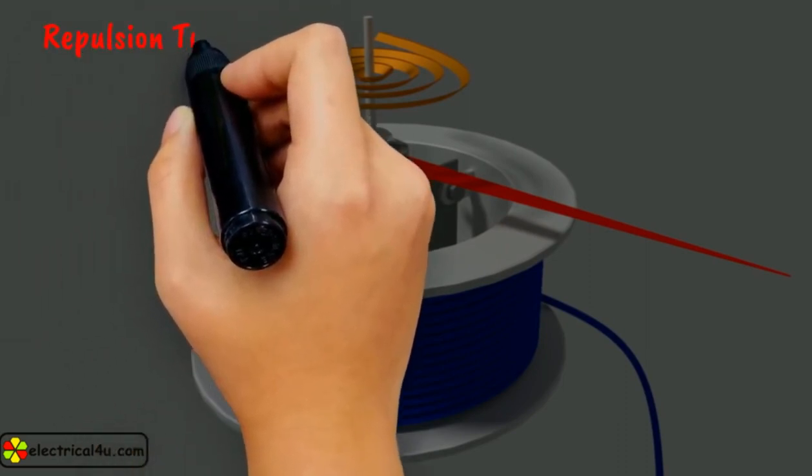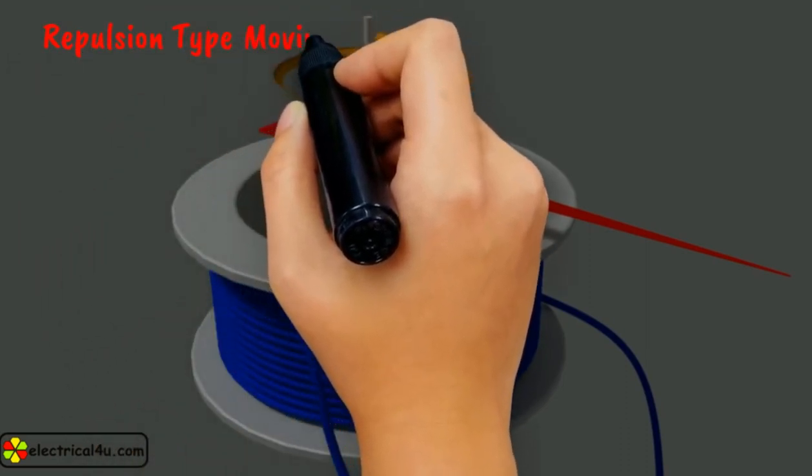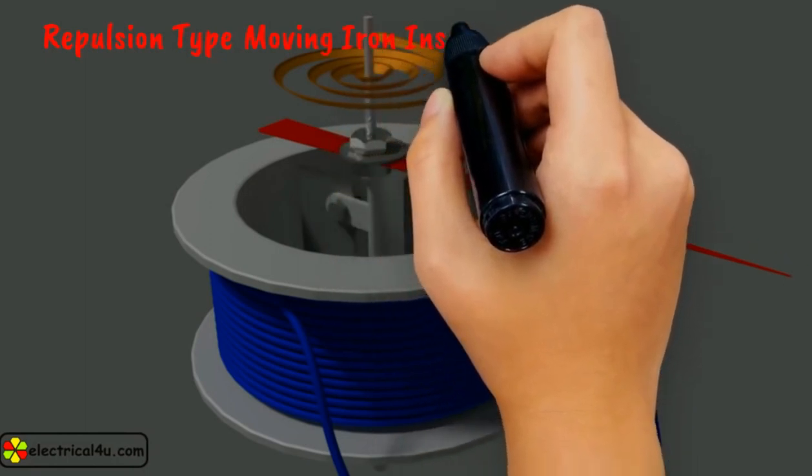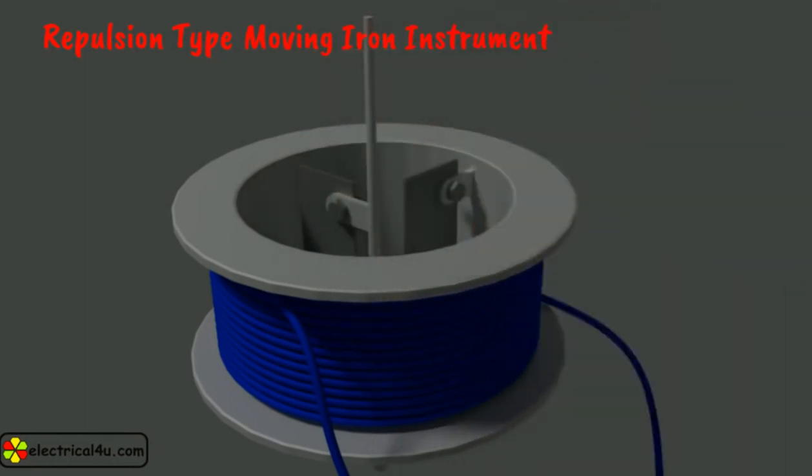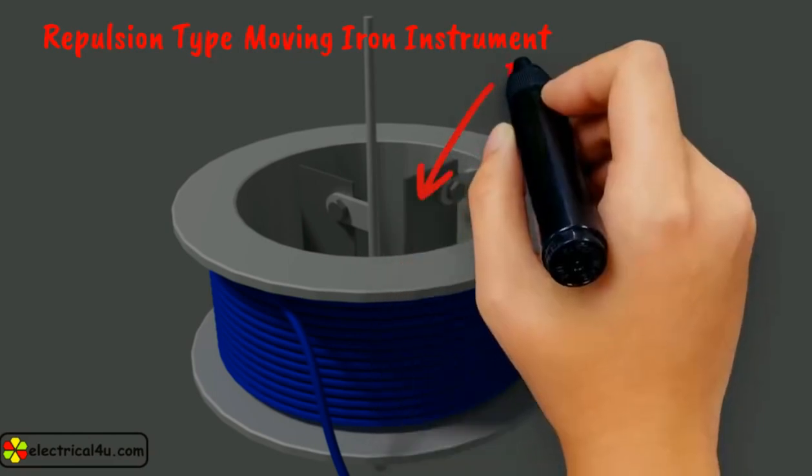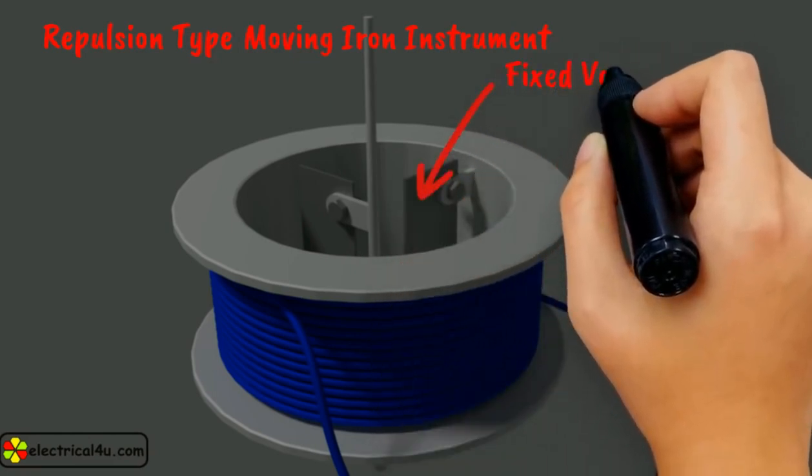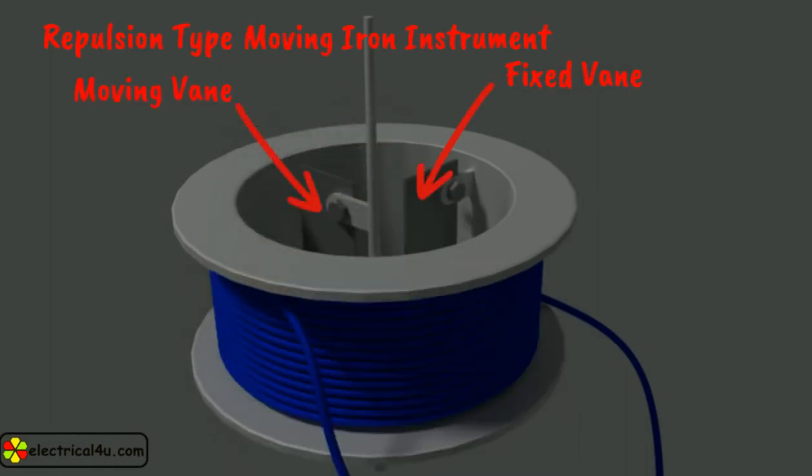Let us discuss repulsion type moving iron instrument. In this type of instrument, two soft iron vanes are used, one fixed and attached to the stationary coil while the other is movable and mounted on the spindle of the instrument. When operating current flows through the coil,